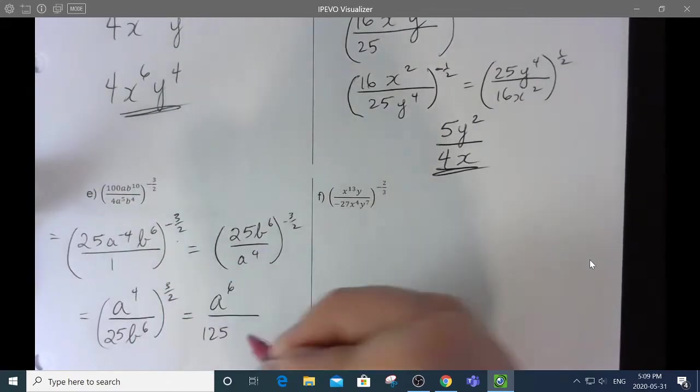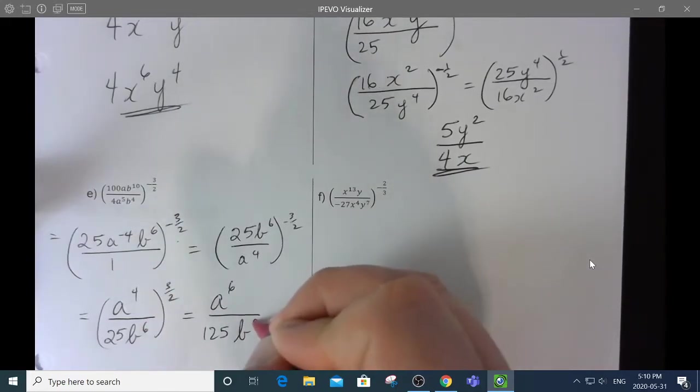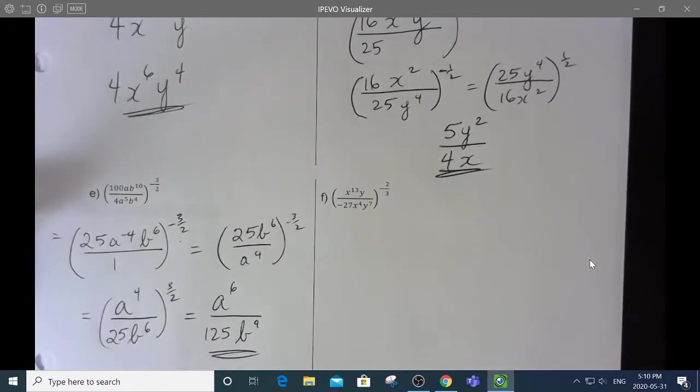So, a to the 4 to the 3 halves is a to the 6 because that's 4 times 3 halves. 25 square rooted is 5 and then cubed is 125. And 6 times 3 halves is 3 times 3 is 9. b to the 9. There we go.